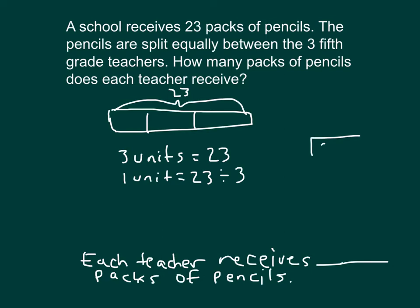If we use the standard algorithm approach to be able to solve this here, three goes into 23 seven whole times, and that remainder would be two. If we could divide that two, we would divide it by three. That's why 23 divided by three is seven and two-thirds. So one unit of this is seven and two-thirds packs of pencils.